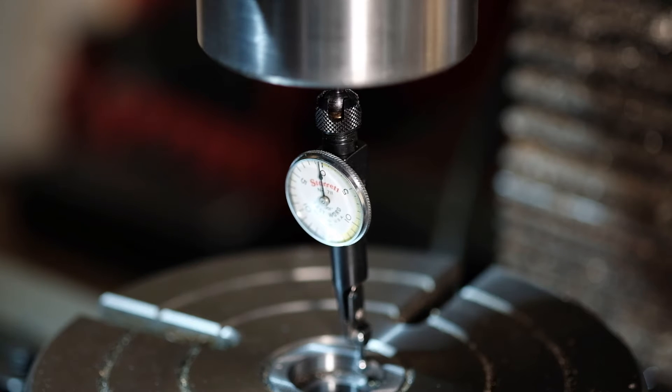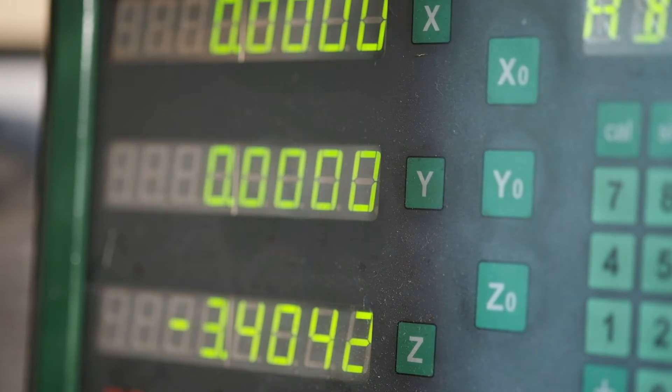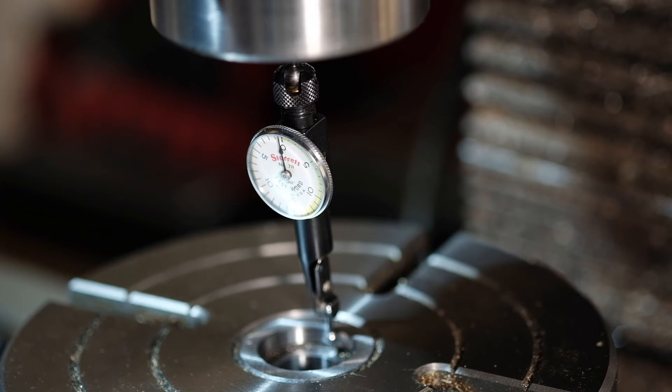Here we are. Lock them in, zero it out. And just to keep us honest, move the table a little bit. Make sure that the needle moves by a few thousandths. Let's make sure that the DRO numbers change by the same amount. Looks good. We're zeroed out. The quill is directly over the center of that table.